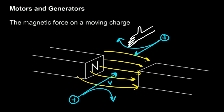Your right hand is pointed in the direction of the motion such that the fingers can naturally bend into the direction of the field. In that case, your thumb then naturally points in the direction of the force that that particle will experience as it moves across the field. It turns out that if these particles were negative instead, everything would be reversed — they would be pushed the opposite way.